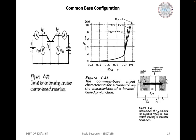Before we start with common base configuration, let us review BJT current amplification. A small change in the base current, Delta IB, produces a large change in collector current, Delta IC, and a large emitter current change, Delta IE. The current gain from base to collector is stated as Beta DC = Delta IC / Delta IB.